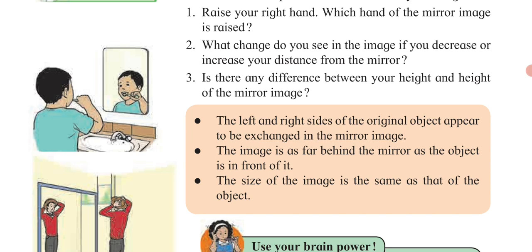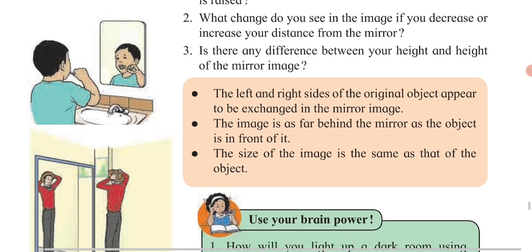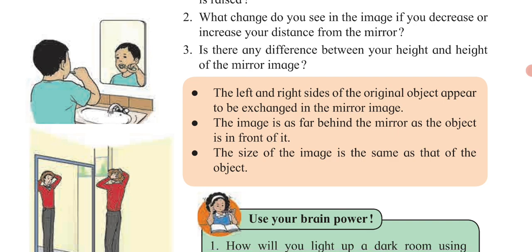The image is as far behind the mirror as the object is in front of it. How close or how far you are from the mirror determines where the image appears behind it. Also, the size of the image is the same as the size of the object — your nose will not appear bigger, and your eyes or fingers will not appear taller or bigger.